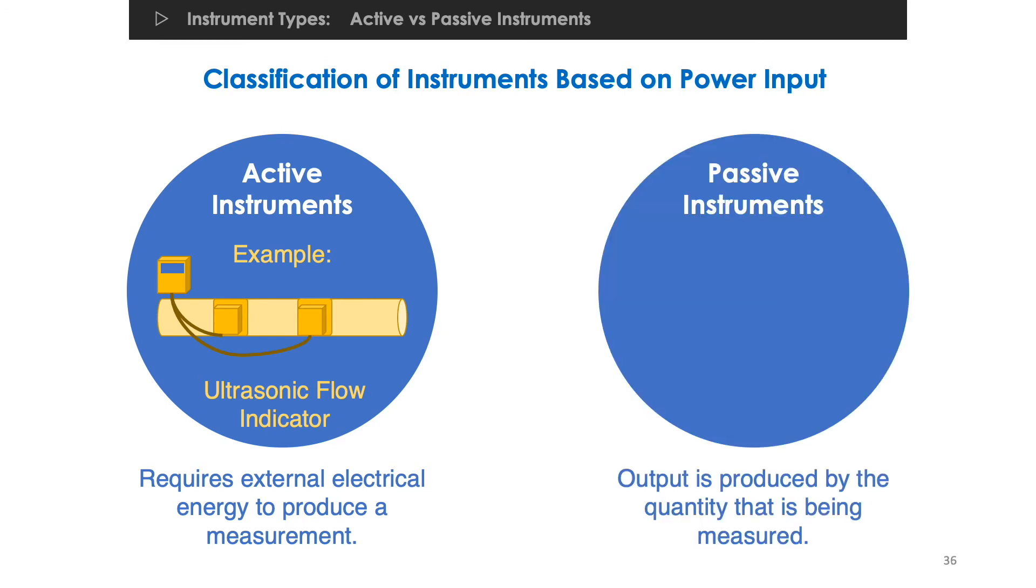On the other hand, a passive instrument does not require an input power source to perform measurements. For example, when a glass thermometer measures temperature, the contraction or expansion of the liquid inside it gives a direct reading of temperature. It is able to show the measurement without the need for electrical energy input.